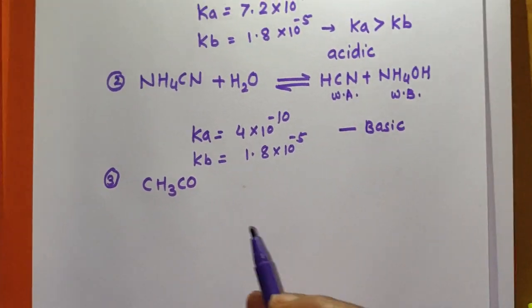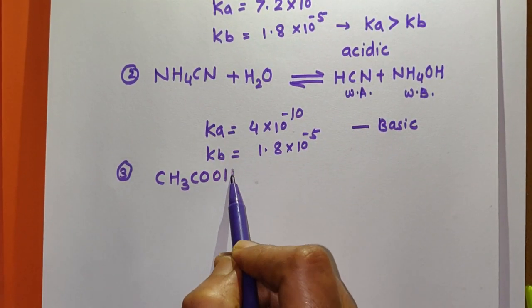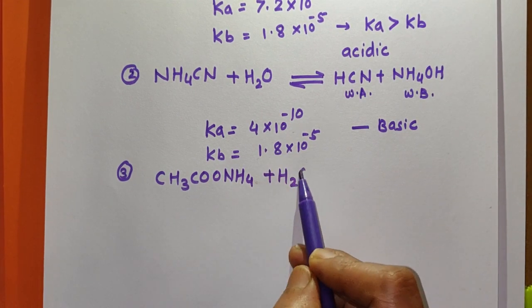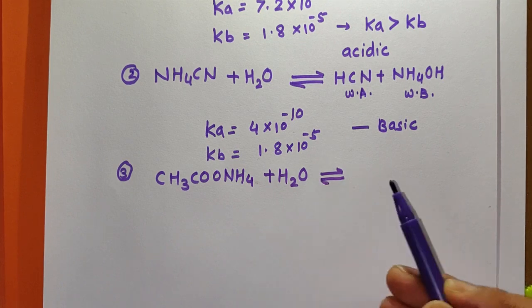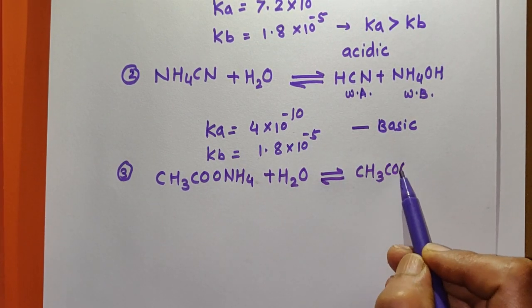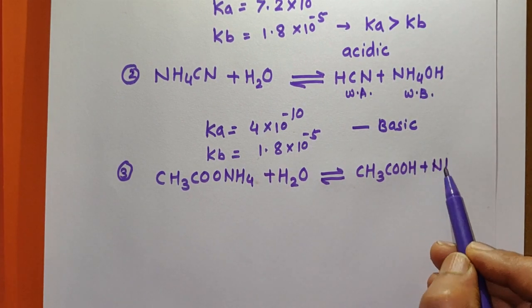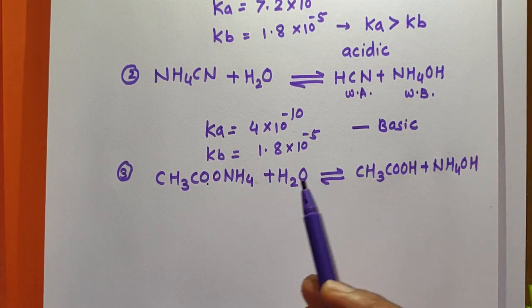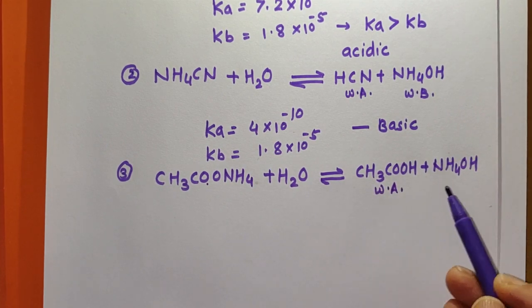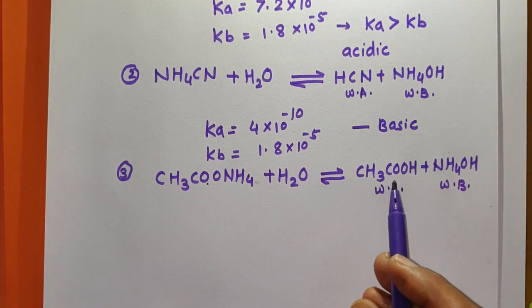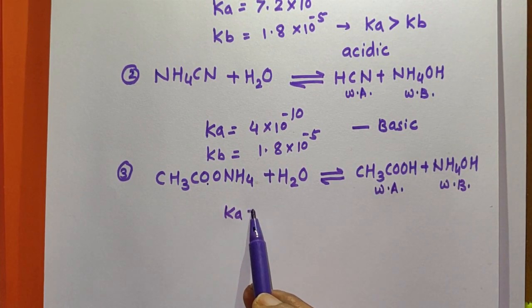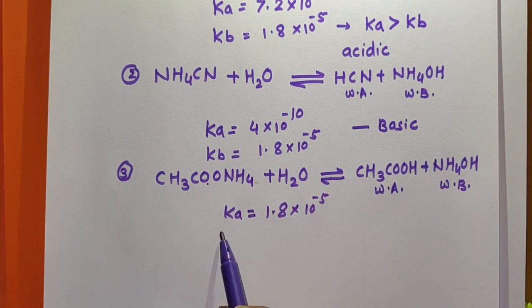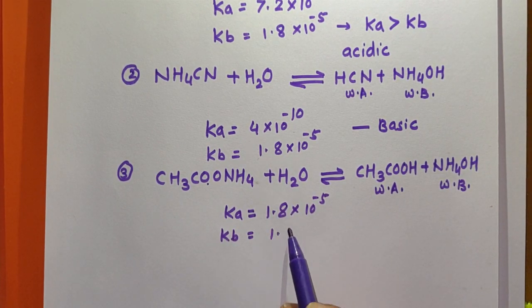The third example is CH₃COONH₄, a salt of weak acid and weak base. When it reacts with water, it gives weak acid CH₃COOH and weak base NH₄OH. It ionizes to give CH₃COO⁻ ions and NH₄⁺ ions, which react with water to give CH₃COOH and NH₄OH. The Ka for CH₃COOH is 1.8 × 10⁻⁵.